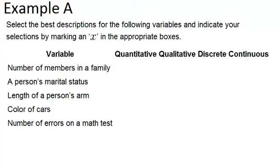So we have a bunch of different variables here: number of members in a family, a person's marital status, length of a person's arm, color of cars, and number of errors on a math test.